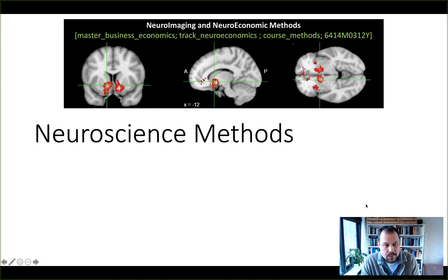In this part of the lecture, we go into more detail in relation to neuroscience methods. We've discussed some of them already, but very briefly, and here I want to give you some examples from prominent studies in the field of neuroeconomics that have used some of these methods successfully.